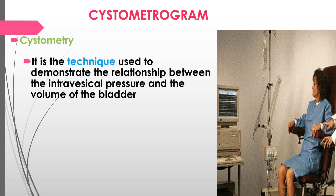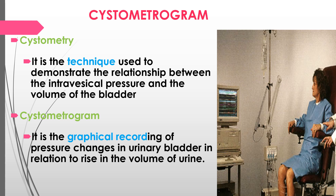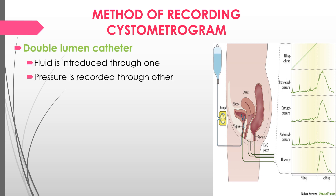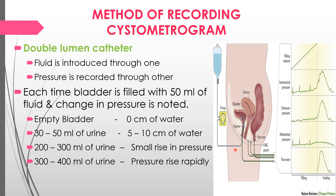Cystometry is a technique used to demonstrate the relationship between intravesical pressure and the volume of the bladder. A cystometrogram is a graphical recording of pressure changes in the urinary bladder in relation to volume. The method uses a double-lumen catheter: one lumen fills the bladder with fluid and the other records pressure. The bladder is filled in increments of 50 ml and the pressure change is recorded each time.